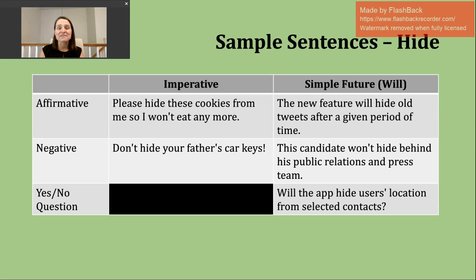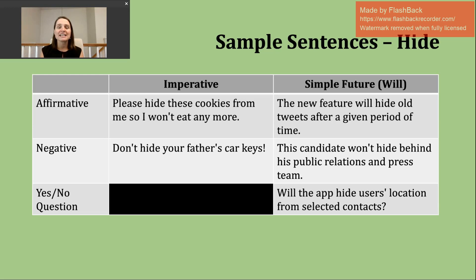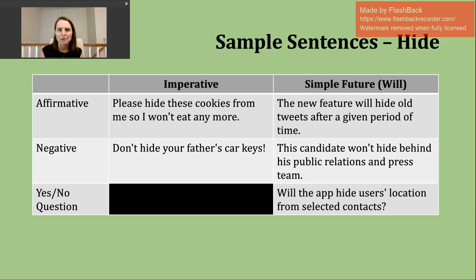For a negative simple future sentence using will, use will not and then the base verb, or the contraction won't and then the base verb — they mean the same thing. Example: this candidate won't hide behind his public relations and press team. Here's our phrasal verb hide behind, suggesting this candidate will not avoid criticism or punishment if he has done something wrong, and won't point to others — he will accept that criticism or punishment.